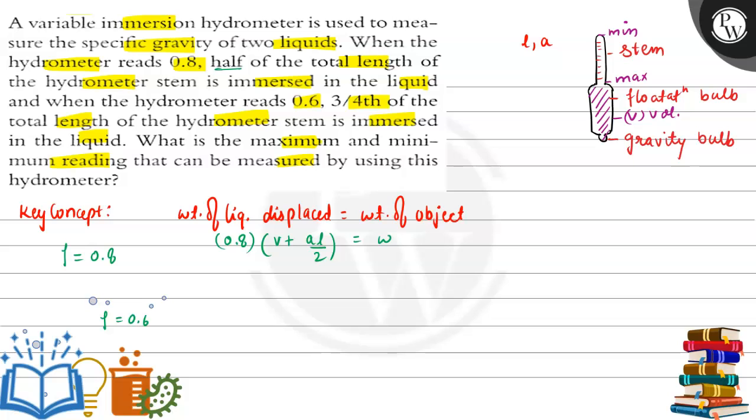For the second case, we have density as 0.6, here gravity is also multiplied with this. For the second case, density is 0.6 multiplied by volume V plus it is said that three-fourth of the length is immersed. That means 3 by 4L multiplied by area of cross-section A multiplied by G, this is equal to weight here.